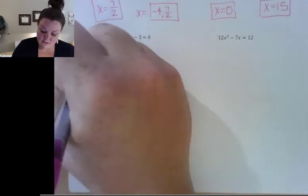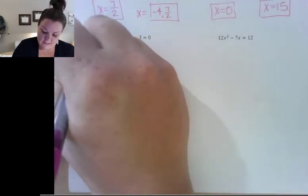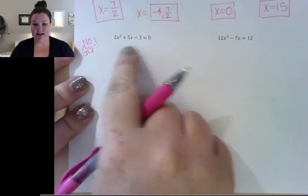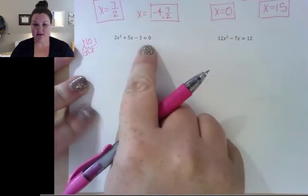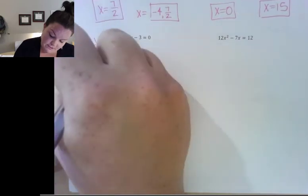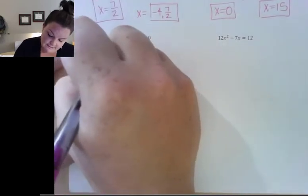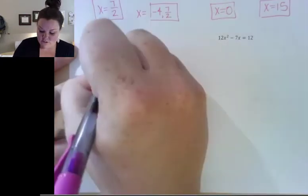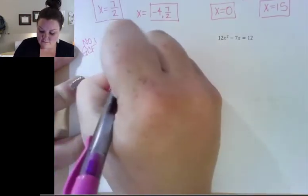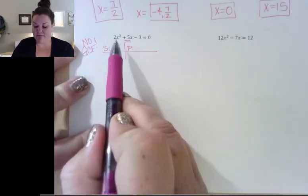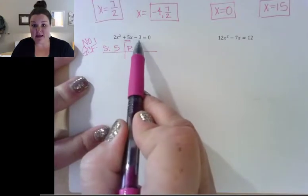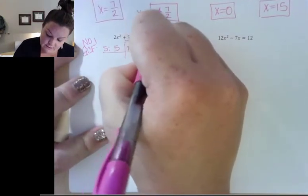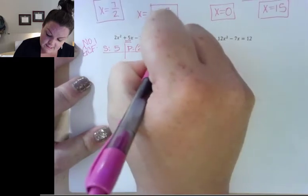Always look for a greatest common factor first. In this case, there is no greatest common factor — these don't have anything in common. So I'm going to go straight to my chart. My sum is my middle coefficient, which is 5. And my product is my first coefficient times my last coefficient.